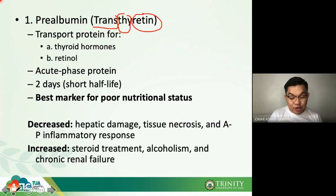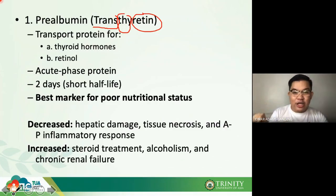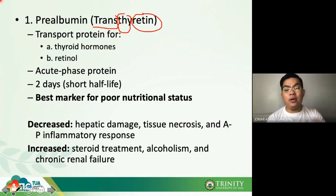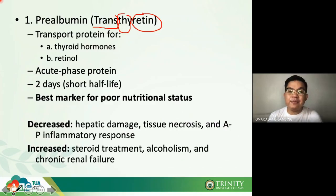A useful technique: write down the negative acute phase reactants because there are only a few proteins that are negative — meaning they decrease during inflammation. Almost all other proteins increase. Prealbumin can also be increased in steroid treatment, alcoholism, and chronic kidney failure.